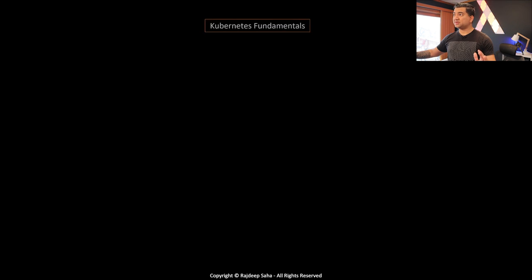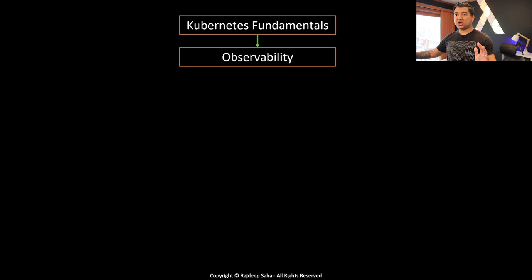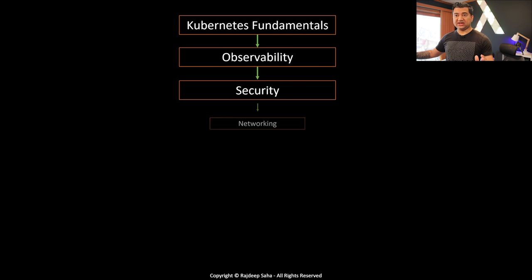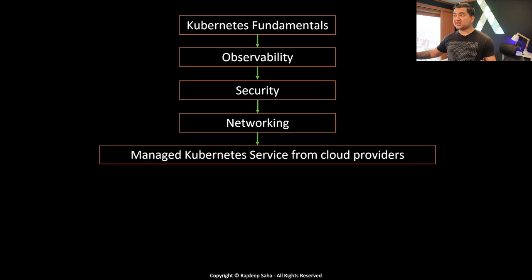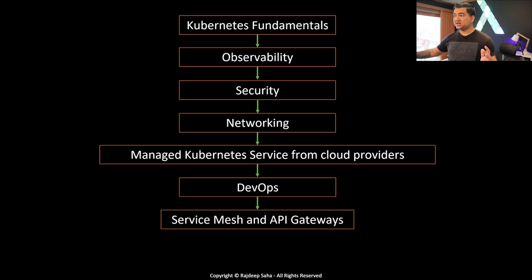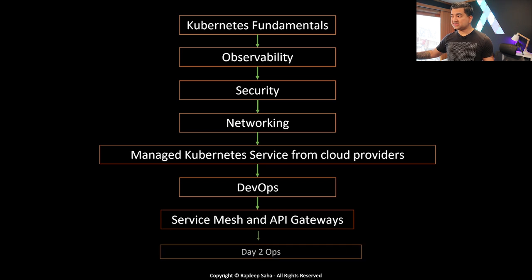The Kubernetes roadmap is divided into these main areas: Kubernetes fundamentals, observability, security, networking, managed Kubernetes service from cloud providers, DevOps, service mesh and API gateways, and day two operations.